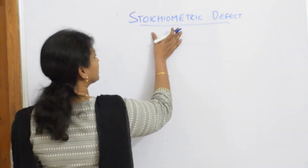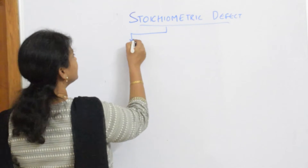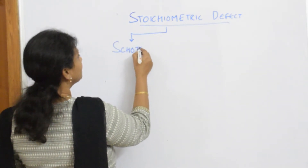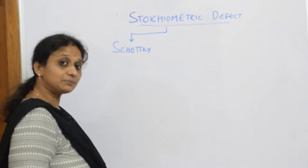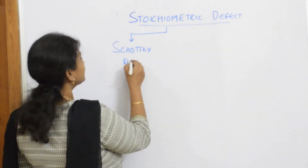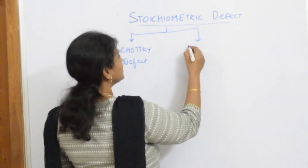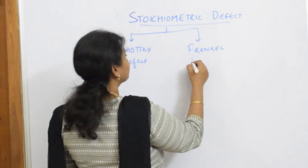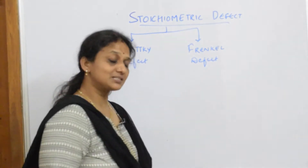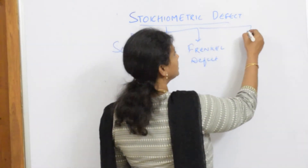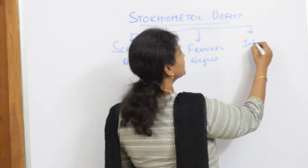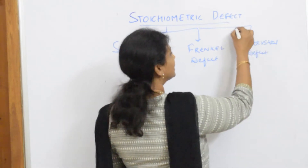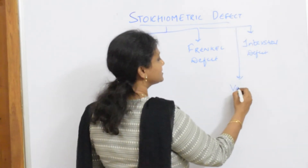When I speak about stoichiometric defect, it is again divided into Schottky — remember it is double T-K-Y — Schottky defect, and it is also studied under Frenkel defect. Apart from this, I also have interstitial defect, and it is also studied under a defect called vacancy defect.